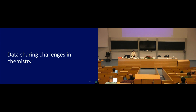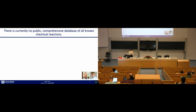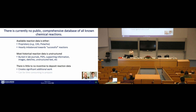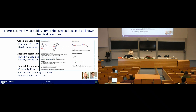I want to end by talking about some data sharing challenges we face in chemistry. There's currently no public comprehensive database of all chemical reactions — the emphasis is on the word public. Available reaction data is either proprietary or heavily imbalanced towards successful reactions. A lot of historical reaction data is unstructured, buried in lab journals, PDFs, supplementary information, images, or sketches. There's very little incentive to deposit this reaction data, especially for failed experiments. This creates significant additional work — it's time-consuming to prepare and is not the standard in the field. The many different ways chemical reactions can be represented make this a very hard problem.